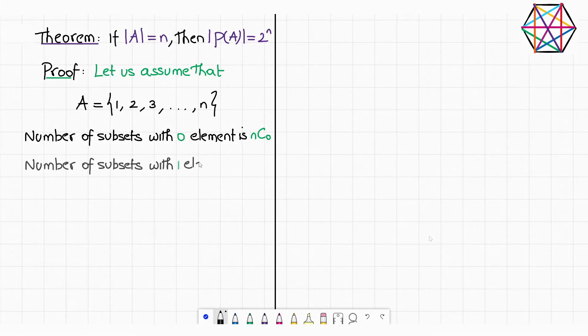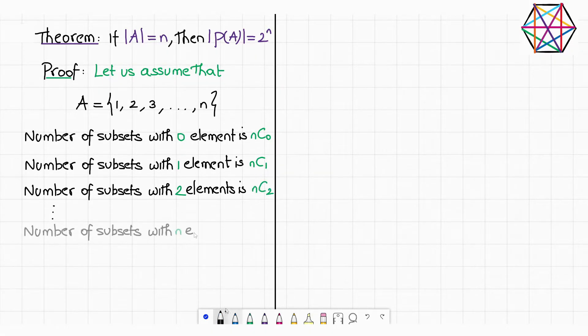Number of subsets with exactly 1 element is n choose 1, which we know is n. The number of subsets with exactly 2 elements is n choose 2. It goes on till the number of subsets with exactly n elements is n choose n.